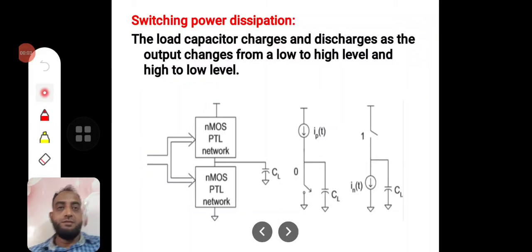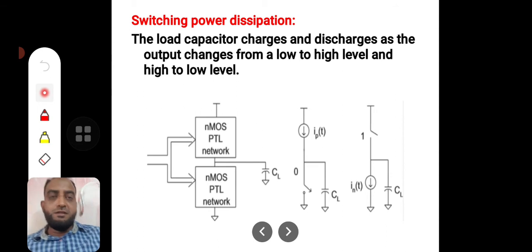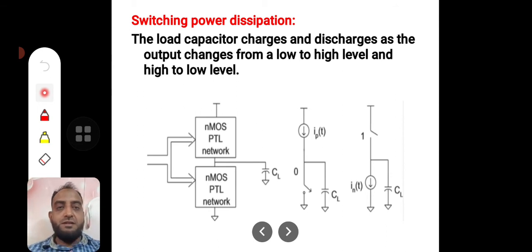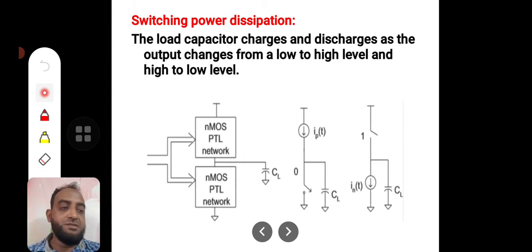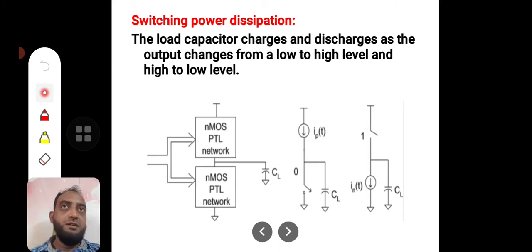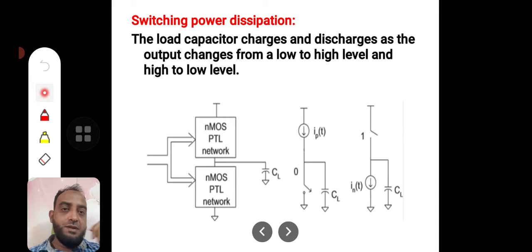Hello, welcome back. In this lecture I'll explain switching power dissipation — it's also a family member of dynamic power dissipation. Switching power dissipation happens because of the switching activity, meaning making the output high or low.